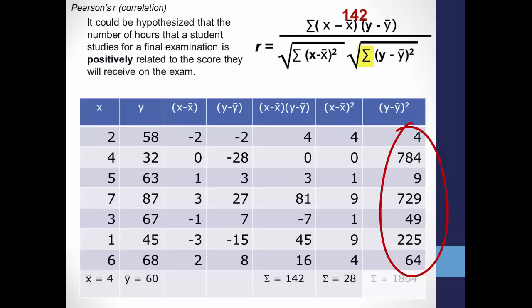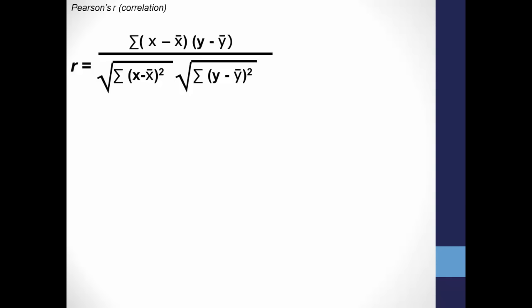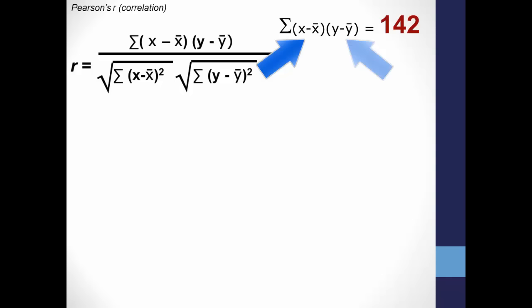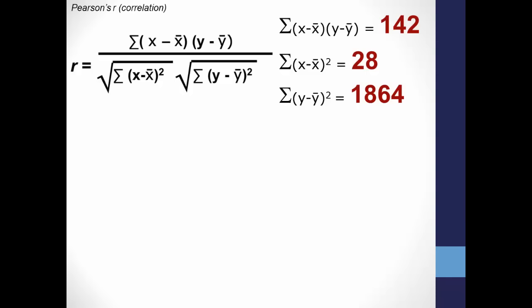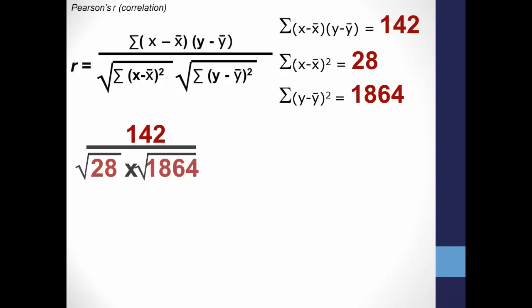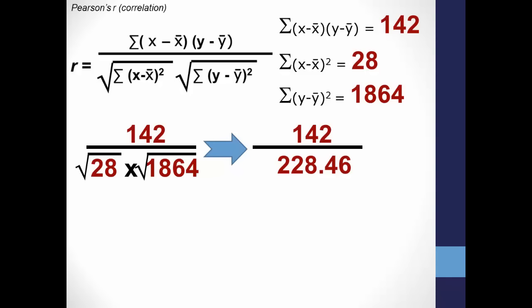Now you have all the data for the denominator. To finish the formula: the numerator is 142. The denominator is the product of the square roots of 28 and 1864 — that is, 5.29 times 43.17, or 228.46. Reducing that down: 142 divided by 228.46 gives us r equals .62.